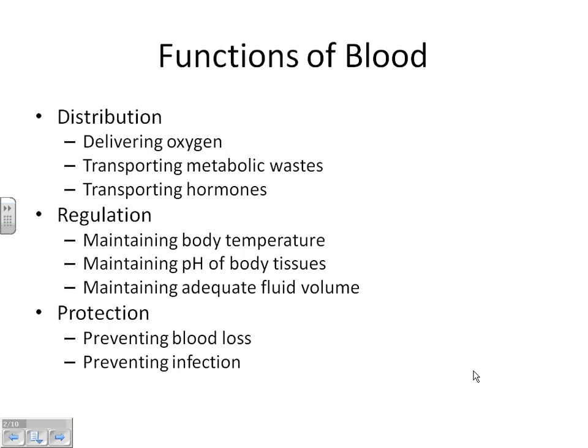Number one waste product is carbon dioxide. It carries carbon dioxide one direction and oxygen the other direction. Something your blood does that you may not automatically think of are the regulation and protection functions of blood. Your blood regulates your body temperature. Have you ever noticed that sometimes areas of your body get hot? Fever, things like that — that's when you have more blood flowing to an area that's damaged.